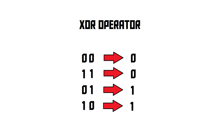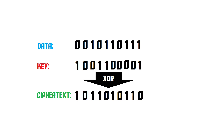The XOR operator checks for exclusivity basically. It sees: is one of the bits a 1 and one of them a 0? Then it outputs a 1. If both of them are the same, the XOR operator outputs a 0. What the stream cipher does is it performs this XOR operation on the first bit, then on the second one, then on the third one, going through the entire message. It XORs the bits of the message with the bits of our key, and that forms our cipher text, which we can then send to the recipient.